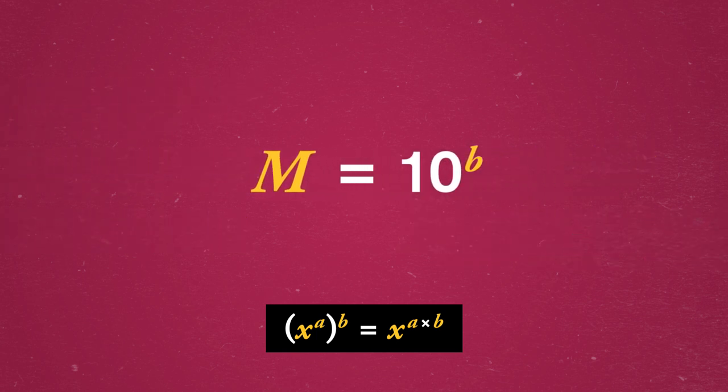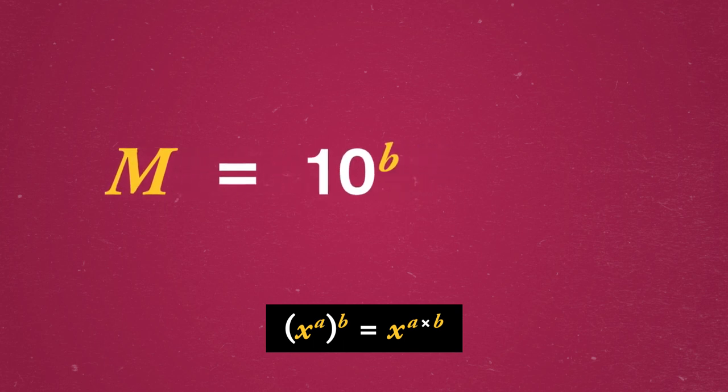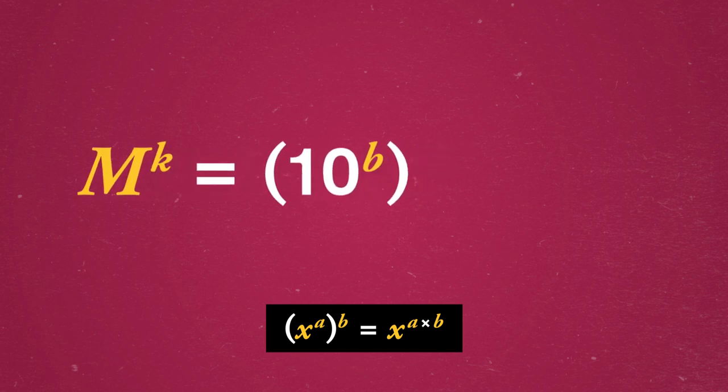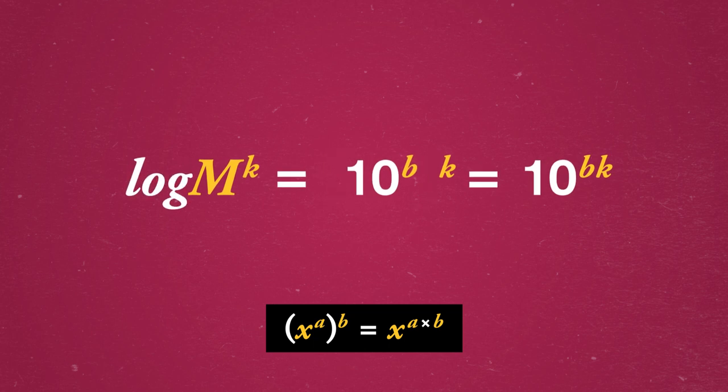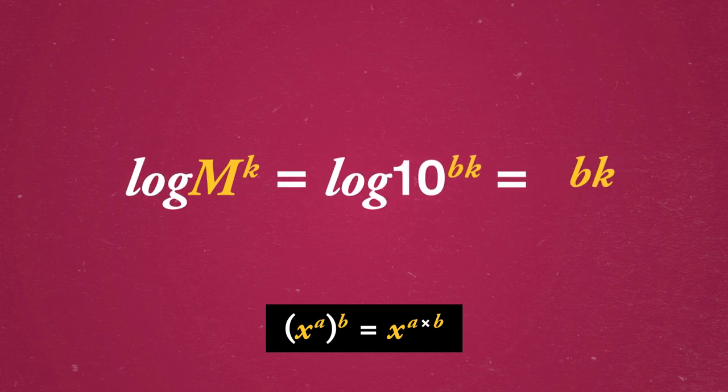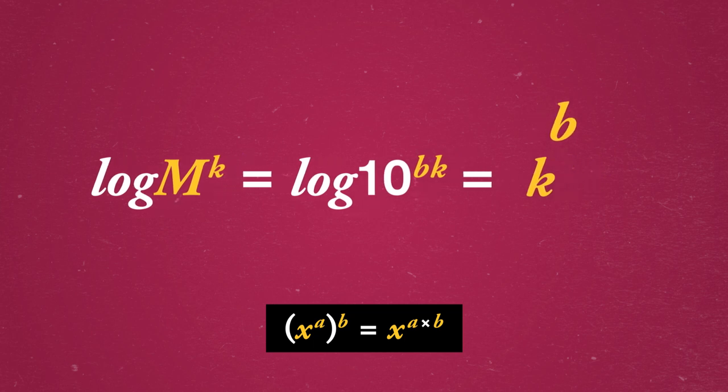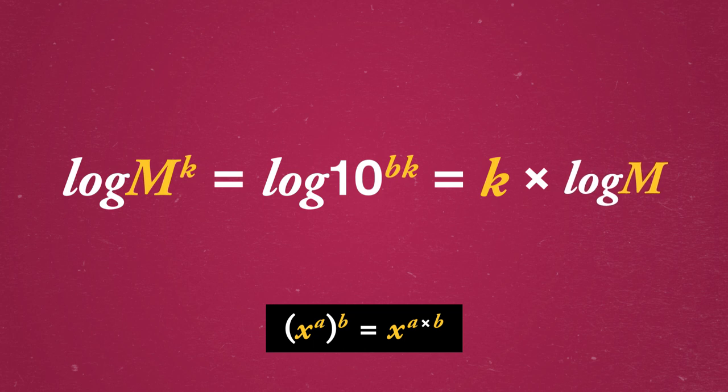But then, let's take it all one step further and stack some powers. If we take m to the k, that's just 10 to the b all to the k, which is equal to 10 to the b times k. So, log of m to the k is just log of 10 to the b times k, which is equal to b times k, since we're asking what power of 10 gives 10 to the b times k. Then, we can rewrite b as log of m to get k times log of m and our rule. We can take down any power inside a logarithm and multiply it in front.